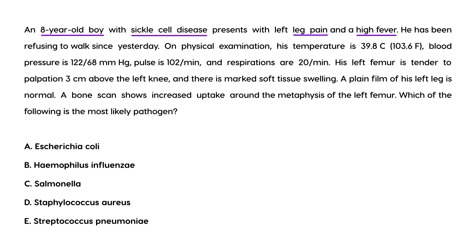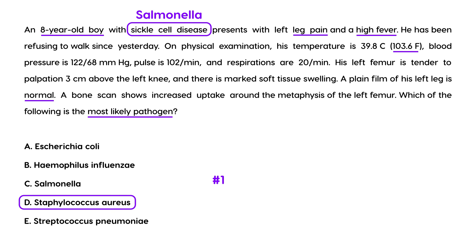Second vignette: An 8-year-old boy with sickle cell presents with left leg pain and high fever, refusing to walk. Temperature is 103, BP 122, pulse 102, respirations 20. His left femur is tender 3 cm above the left knee with marked soft tissue swelling. A plain film is normal but a bone scan shows increased uptake around the metaphysis of the left femur. The question asks for the most likely pathogen. Sickle cell might make you think of Salmonella, which is indeed a very common cause — but the number one pathogen even in sickle cell patients is Staph aureus.